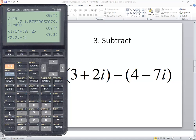My real part four, comma, and then my imaginary part negative seven, closing parentheses, and then press enter. And how you interpret that is that's negative one plus nine i.